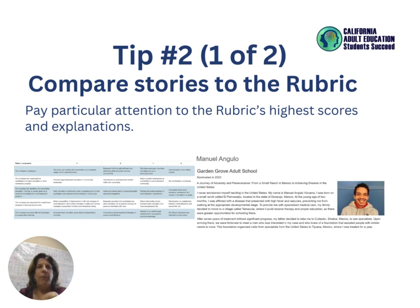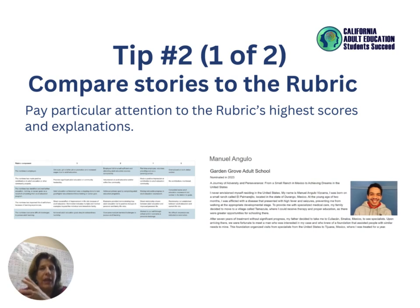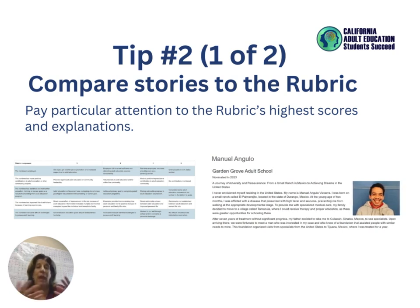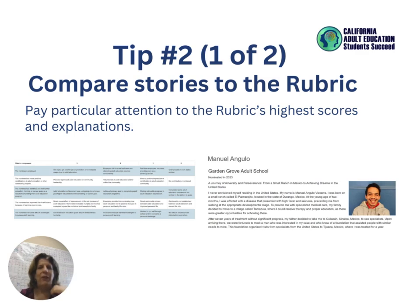Number two: compare stories to the rubric. Our scorers always grade each nomination with the rubric, and they don't know your student. You want to make sure that they do get to know that person through the words that you write. Comparing those stories with the rubric will give you a heads up.